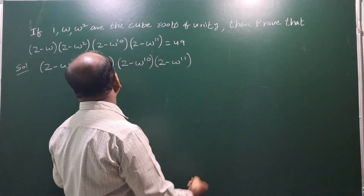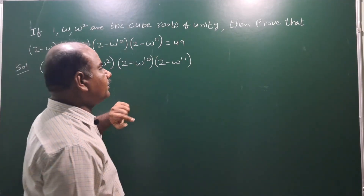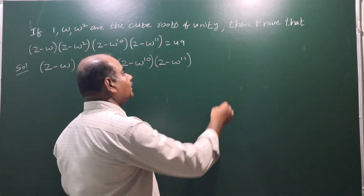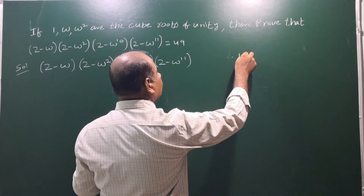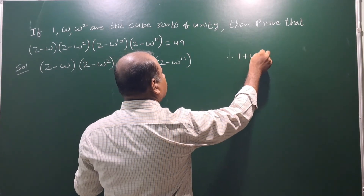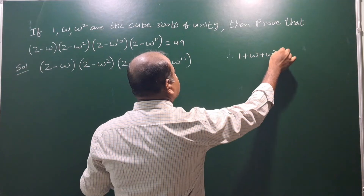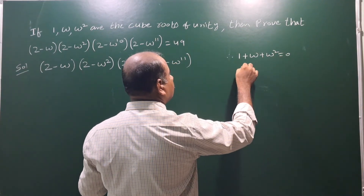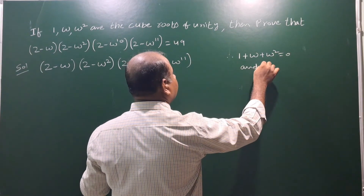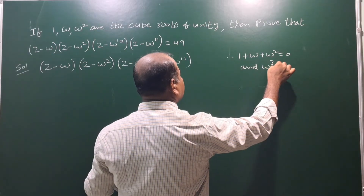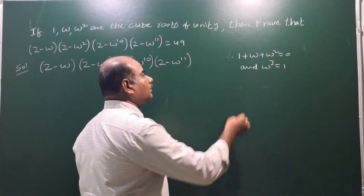Since 1, ω, ω² are the cube roots of unity, we have the formulas: 1 + ω + ω² = 0, and the second result is ω³ = 1.